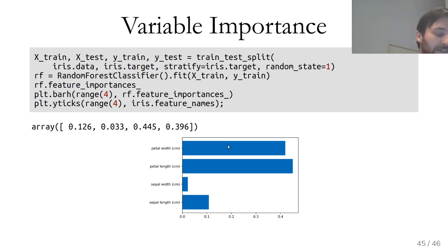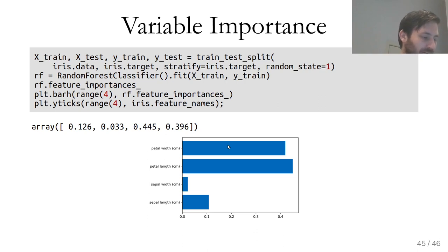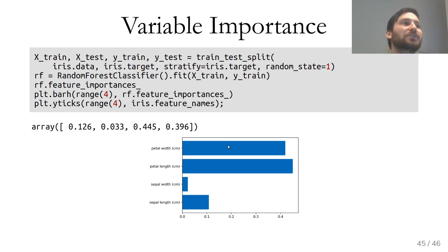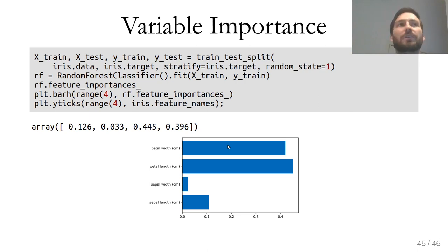As with single decision trees, you can compute feature importances for random forests. On the iris dataset, this measures the average impurity decrease per feature across all trees. This is somewhat biased — it measures impurity decrease on the training set and is not perfectly stable — but it's a quick and dirty way to get some idea of which features are important. If you have a hundred trees in your ensemble, there's no way to plot them all, so feature importances serve as a useful summary.